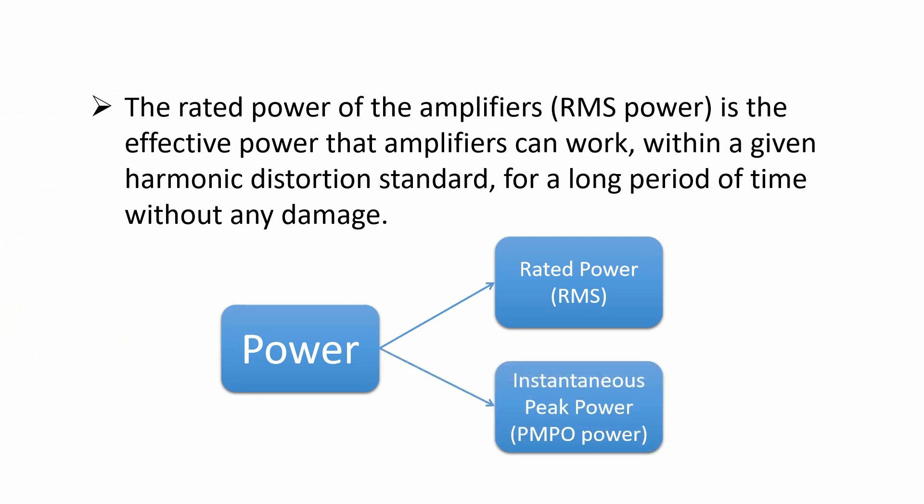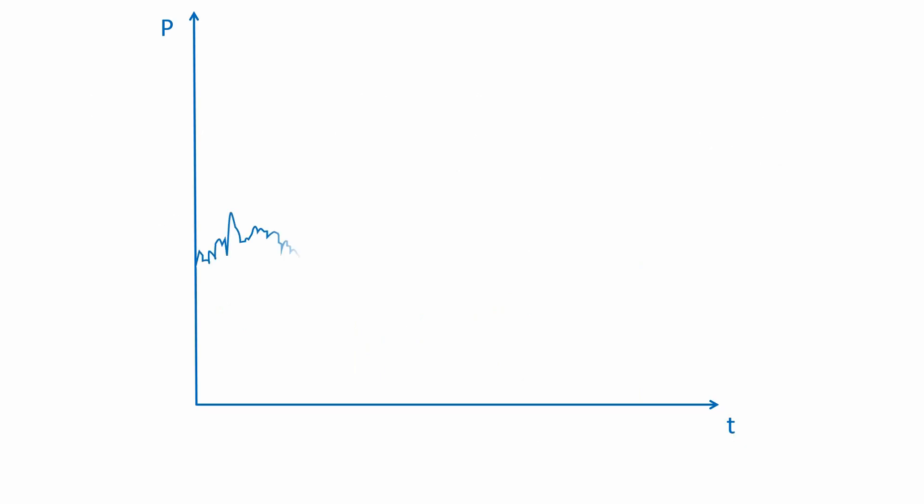In order to cater to consumers' needs, manufacturers usually mark the amplifiers with peak power, which is about two times the rated power, but often this data does not make sense to consumers. In order to provide better service to consumers, Shure Electronics uses the following methods to test the rated power of an amplifier.